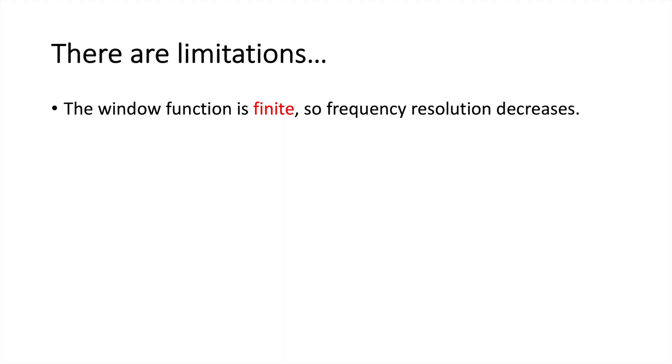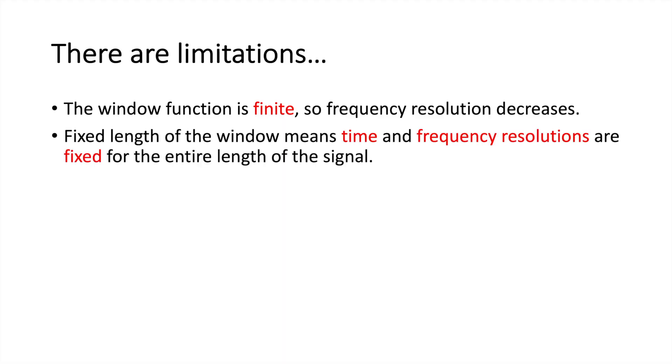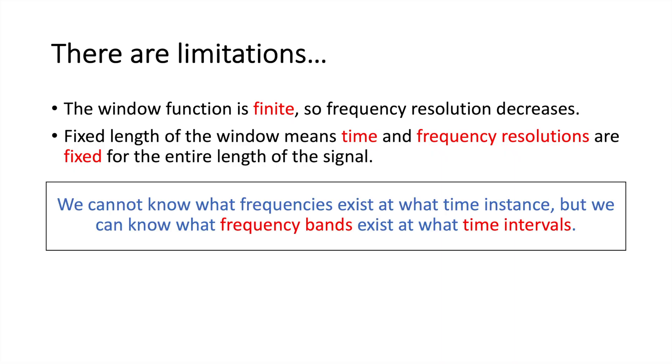This brings us on to limitations. The window function is finite, so the frequency resolution compared to the Fourier Transform is going to decrease. The fixed length of the window means time and frequency resolutions will also be fixed for the entire length of the signal. This comes off a main principle in physics, in which we cannot know what frequencies exist at what time instance, but we can know what frequency bands or frequency ranges exist at what time intervals. And it's given by this equation. If we have a higher time resolution, or smaller time uncertainty, the greater the frequency uncertainty is, the lower the frequency resolution. And it's bounded by 1 over 4 pi.